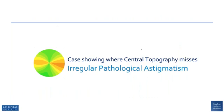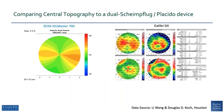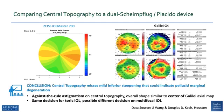Here is a case where central topography actually misses some irregular pathological astigmatism, albeit subtle. Central topography shows against-the-rule astigmatism, and the Galilei also shows against-the-rule astigmatism in the central zone. However, on the Galilei's axial map there is a little inferior steepening, and on the instantaneous curvature map you see inferior steepening below, indicative of forme fruste pellucid marginal degeneration. So central topography misses that very subtle inferior steepening. You might make the same decision regarding a toric IOL but possibly a different decision on whether to use a multifocal IOL based on central topography versus the Galilei.